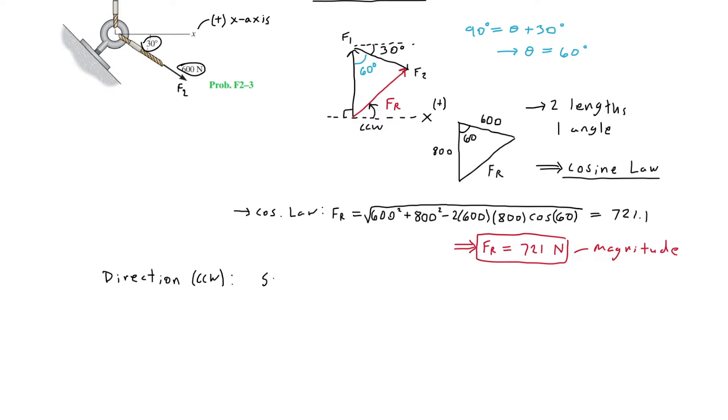Since we're looking for another angle, we can apply the sine law. Here let's call this angle alpha, and then the angle from FR let's call it phi. Therefore applying the sine law, we'll get sine alpha over 800 equals sine 60 degrees over 721, which is FR. Note that FR is across 60 degrees and 800 is across alpha.